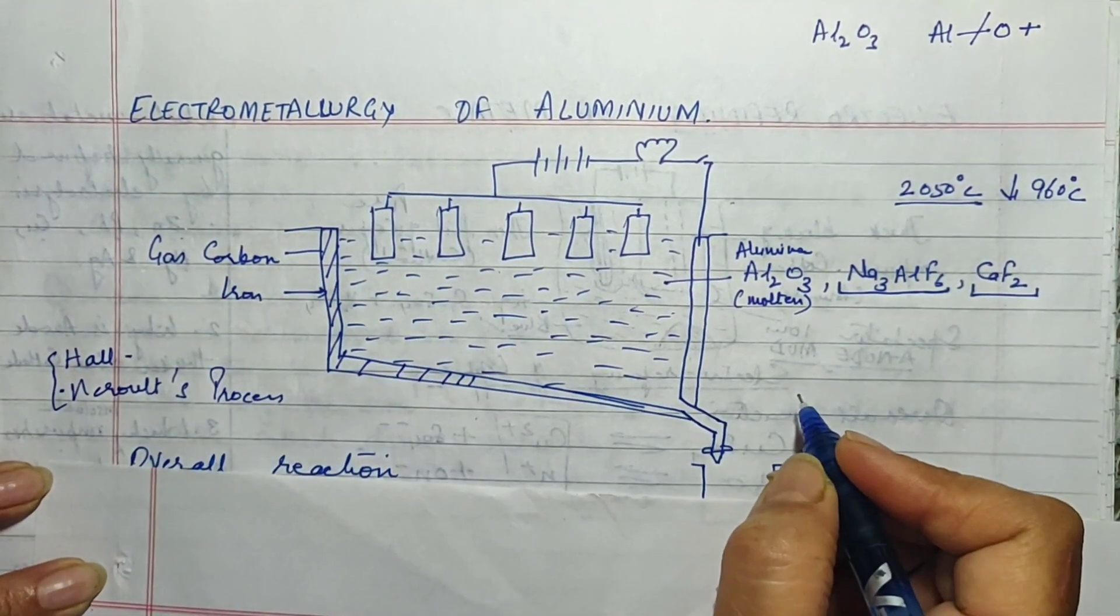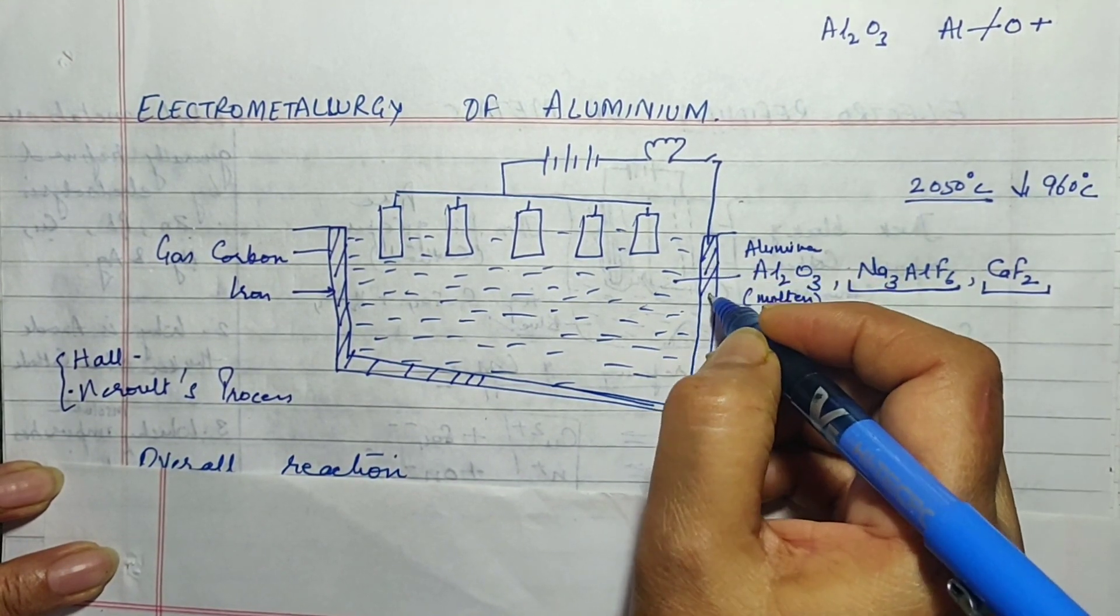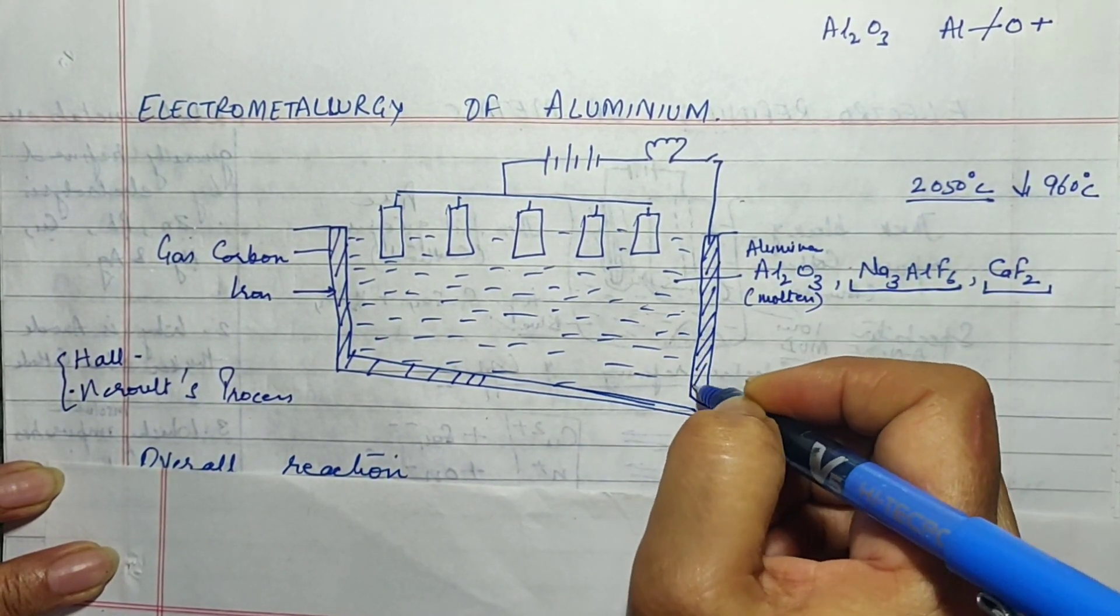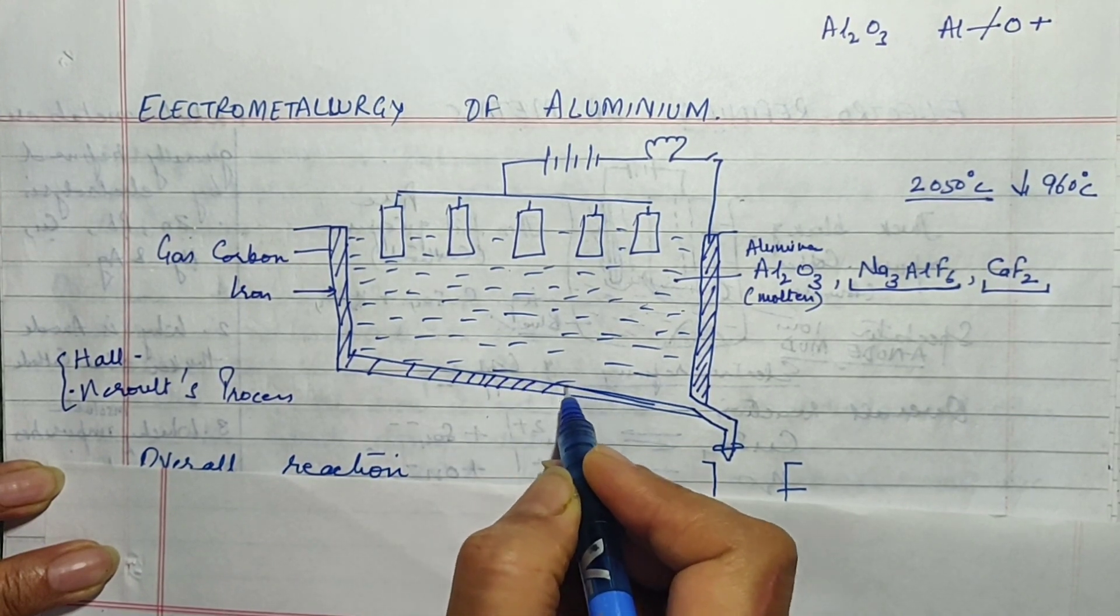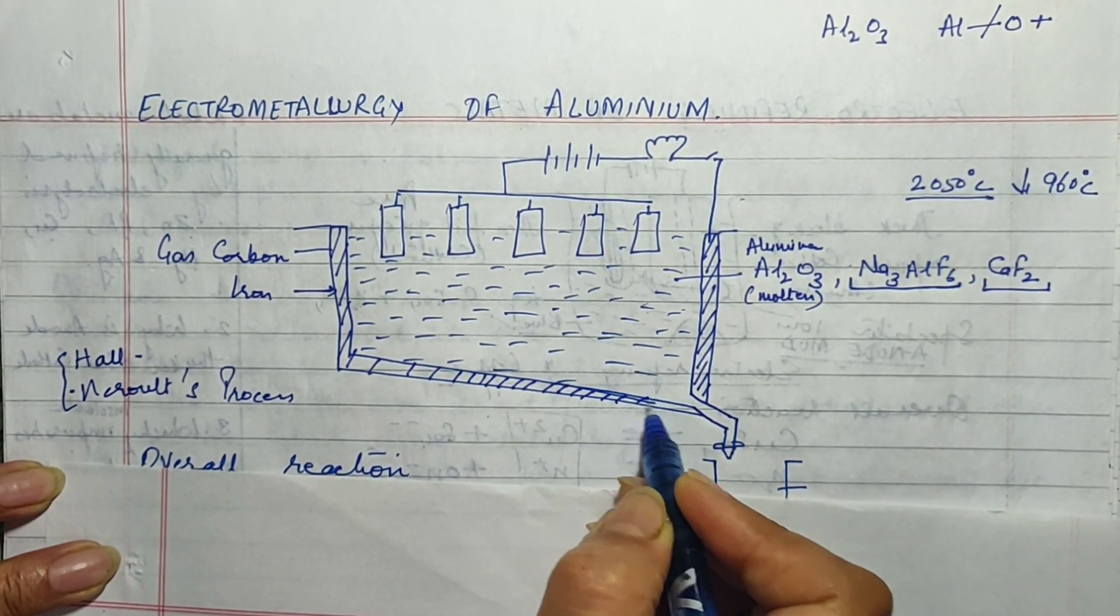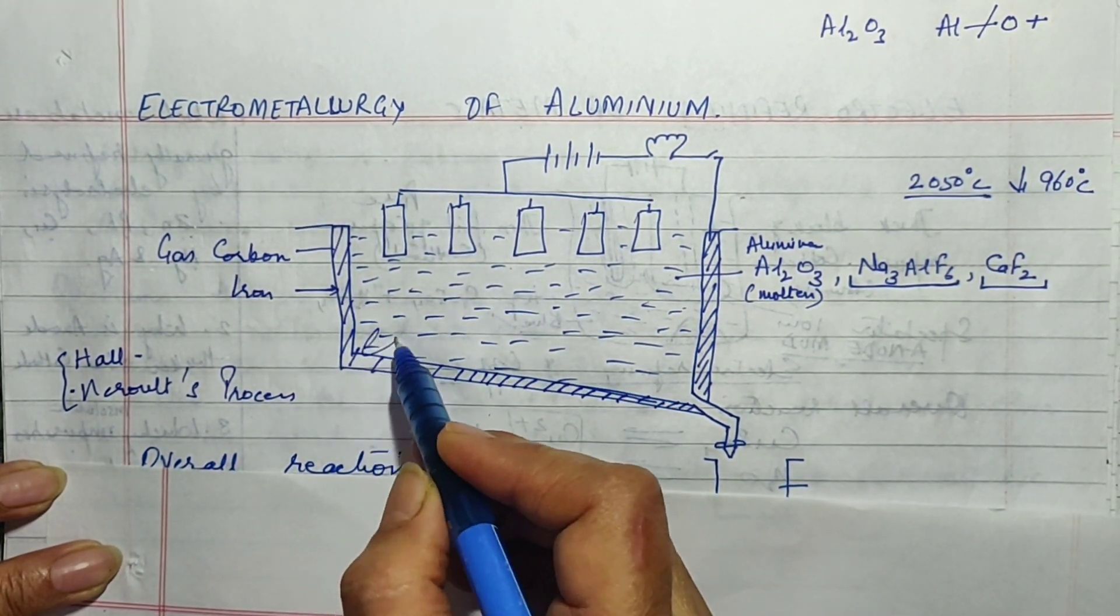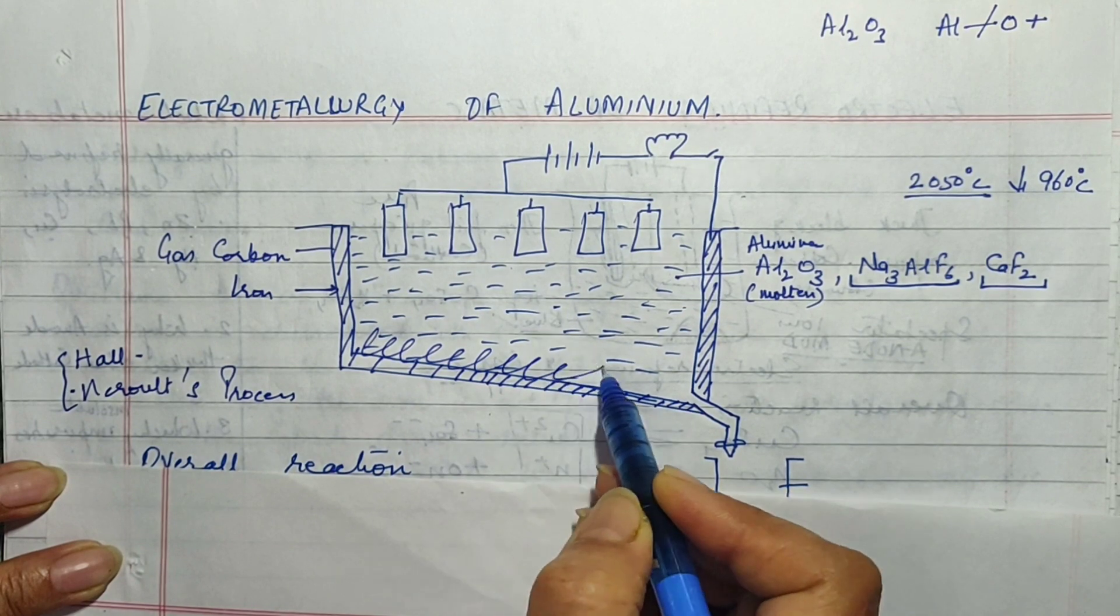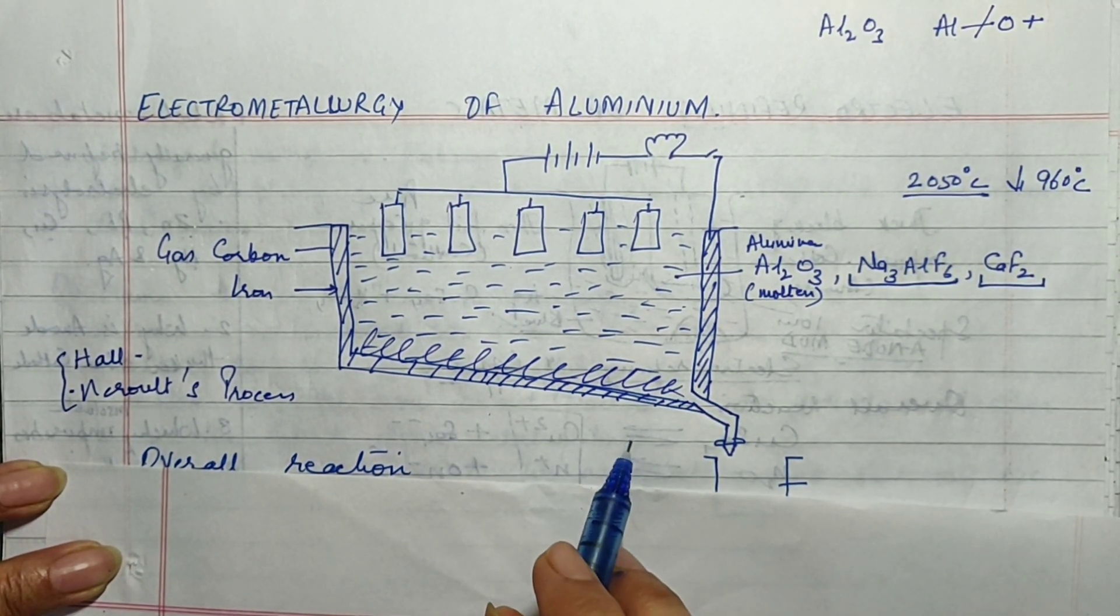Gas carbon is one of the allotropes of carbon which is an excellent conductor of electricity. Now the lining of the electrolytic cell is lined with gas carbon. And as you can see the bottom of the vessel is sloping. The purpose of keeping it sloping is that towards the end of the reaction we are going to collect aluminium at this place. So the collection of aluminium becomes easy if the bottom is slanting.